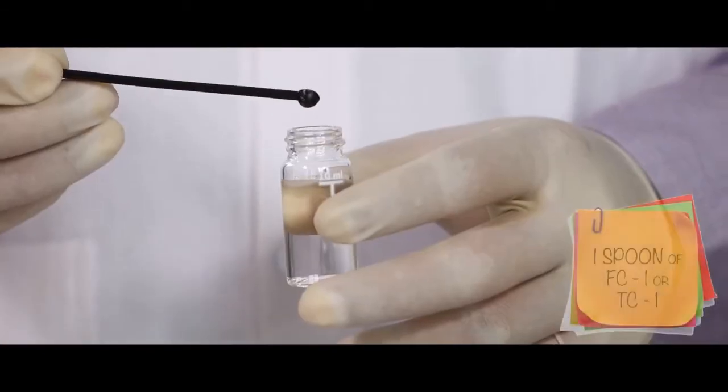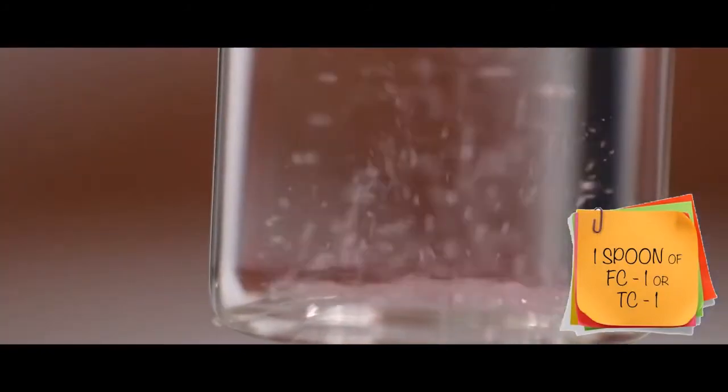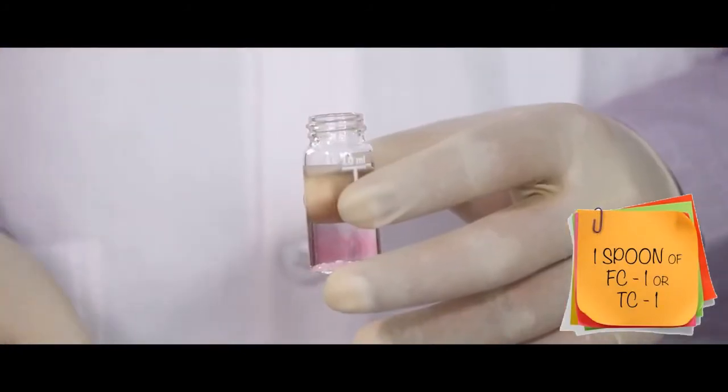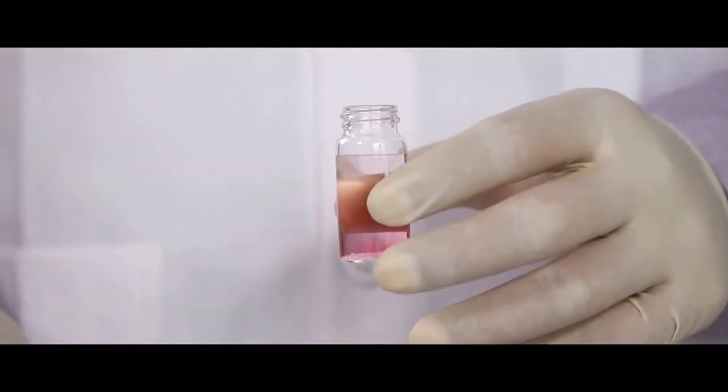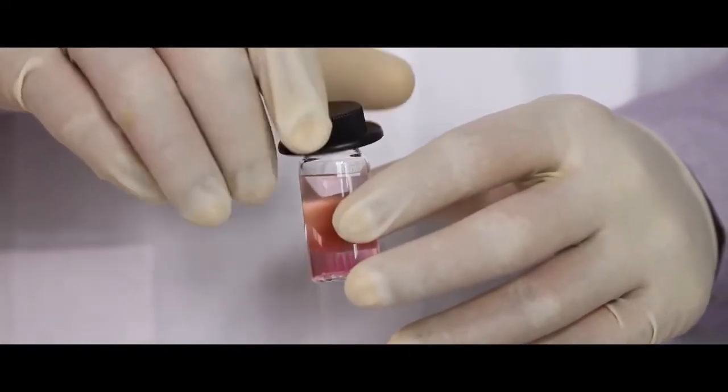take the sample bottle out and add one spoonful of FC1 or TC1 reagent in the bottle. Shake the bottle until the reagent is dissolved completely.